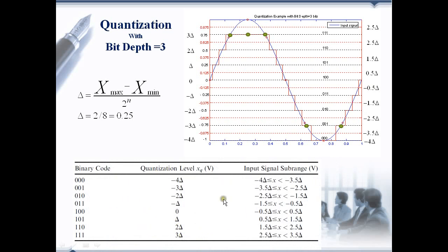In this table, we can see if the input signal level is between 3.5 del and 2.5 del, then it is approximated to 3 del.